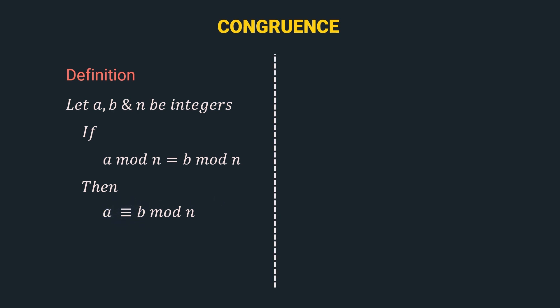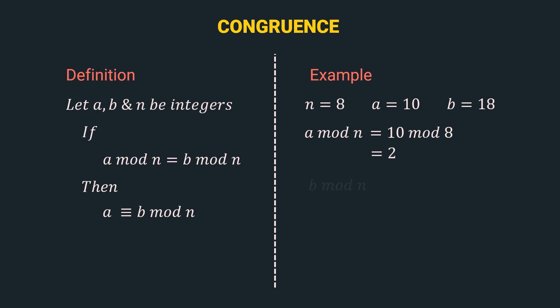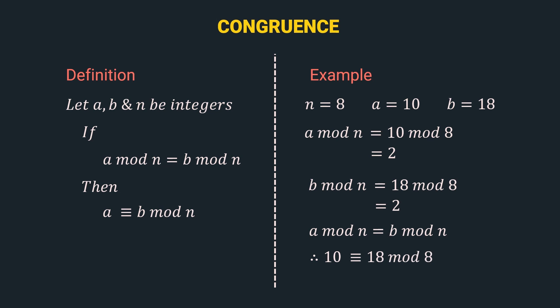Let's have an example to understand it. Here, n is equal to 8, a is equal to 10, and b is 18. First, we calculate a mod n, that is 10 mod 8, which is equal to 2. Then we calculate b mod n, which is 18 mod 8, which is again equal to 2. So, we can see that a mod n is equal to b mod n. Therefore, 10 is congruent to 18 mod 8.